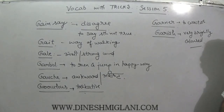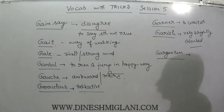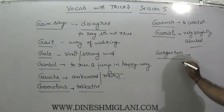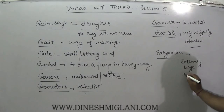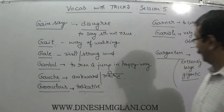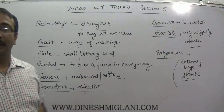Next word is gargantuan, G-A-R-G-A-N-T-U-M. What comes to mind with gargantuan? 'Ghar mein ghanta' — there is a big bell in the house. A bell in the house would be very big. Gargantuan means which is huge, extremely large. You may call it as gigantic, G-I-G-A-N-T-I-C. So gargantuan means extremely large or gigantic. We associated the word gargantuan with 'ghar mein ghanta' — a very big bell.